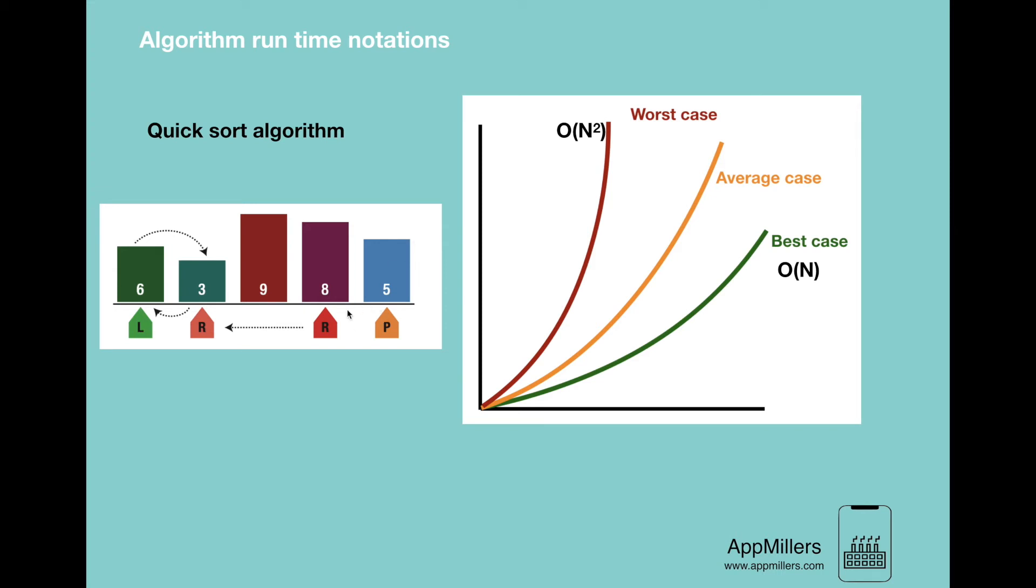And in the average case, sometimes the pivot number will be very high and sometimes will be very low, but it will not happen over and over again. So in this case, time complexity will be O(n log n). Hopefully this example makes it clear and you have understood all three cases.